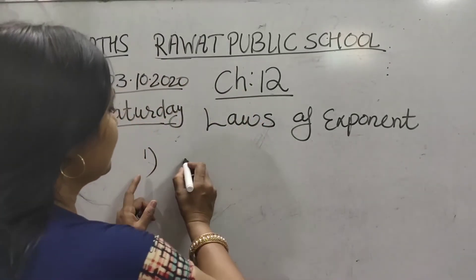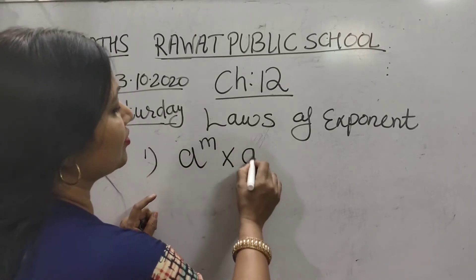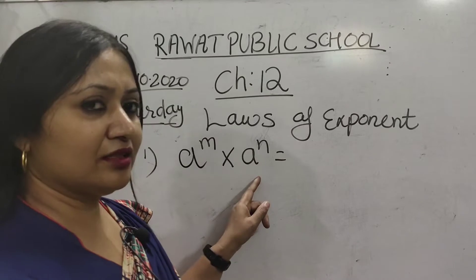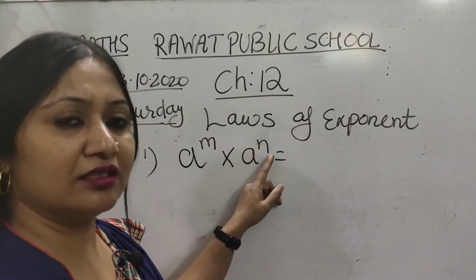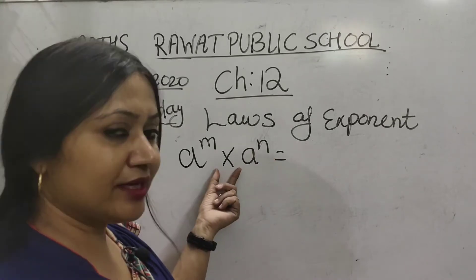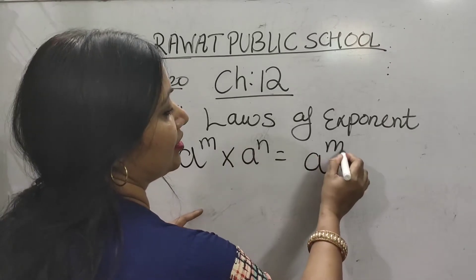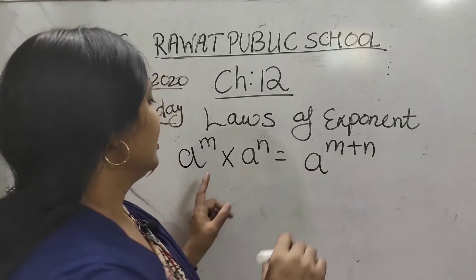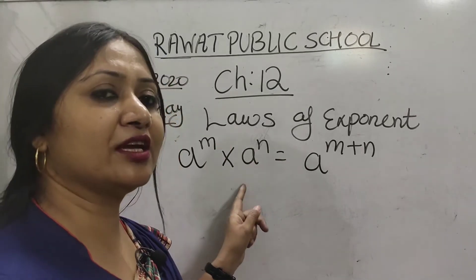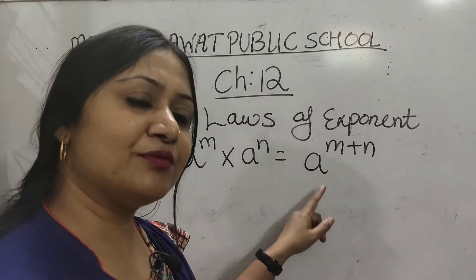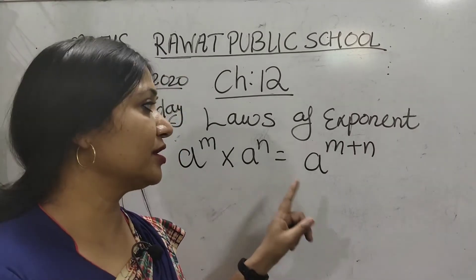First law: suppose a raised to the power m, into a raised to power n — the bases are equal. You have to see here, bases are equal but exponents are different and they are multiplied. So when base is equal and powers are different and multiplied, then a^m × a^n = a^(m+n). This is the first law of exponents.